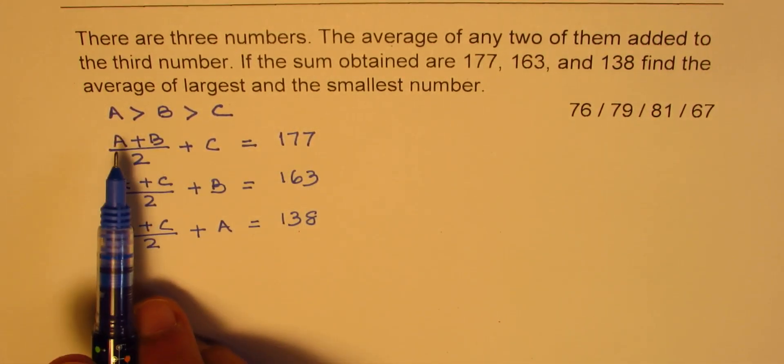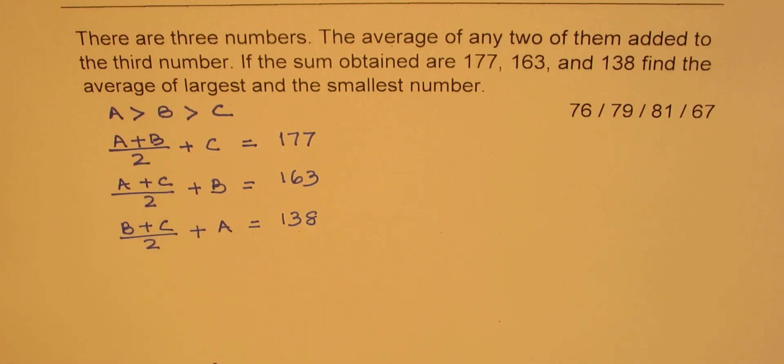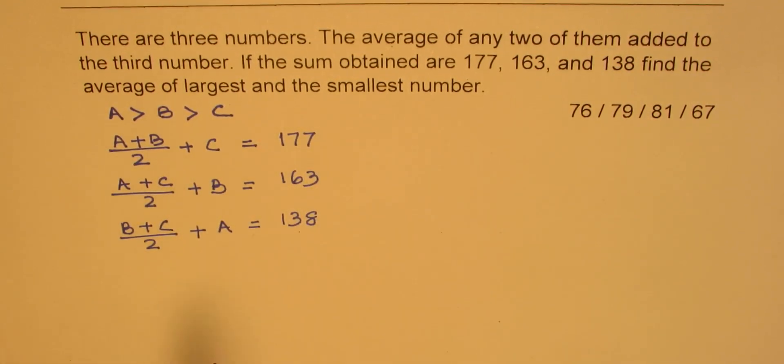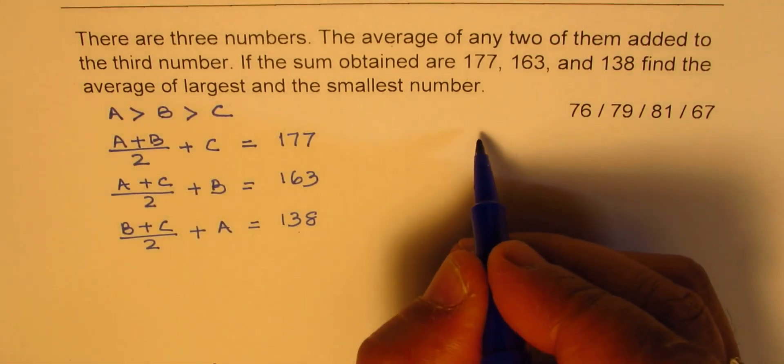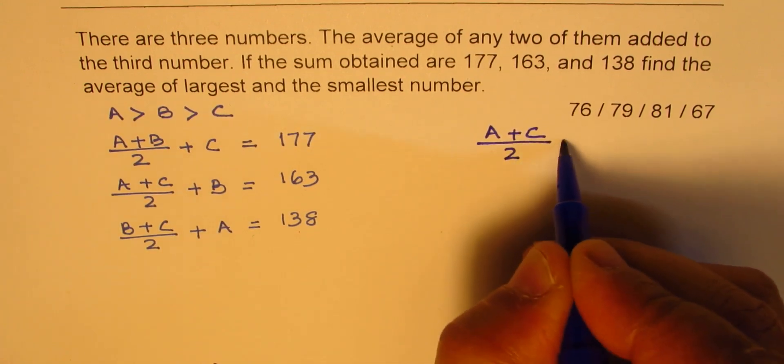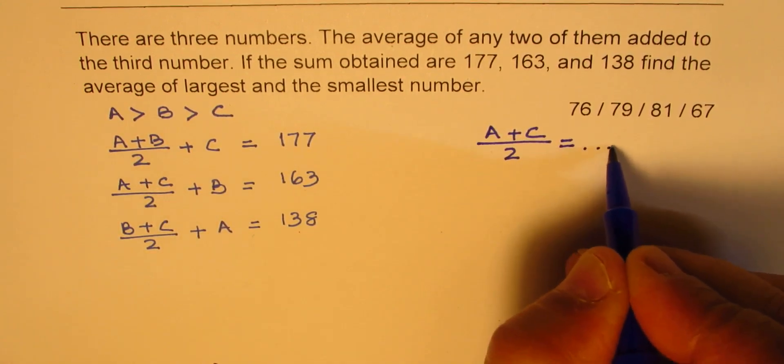Now it is important that no order is given, so you need to actually state this out in your mind. Now our focus is to find what is the average of the smallest and the largest, so what we need to figure out is what is (A+C)/2.